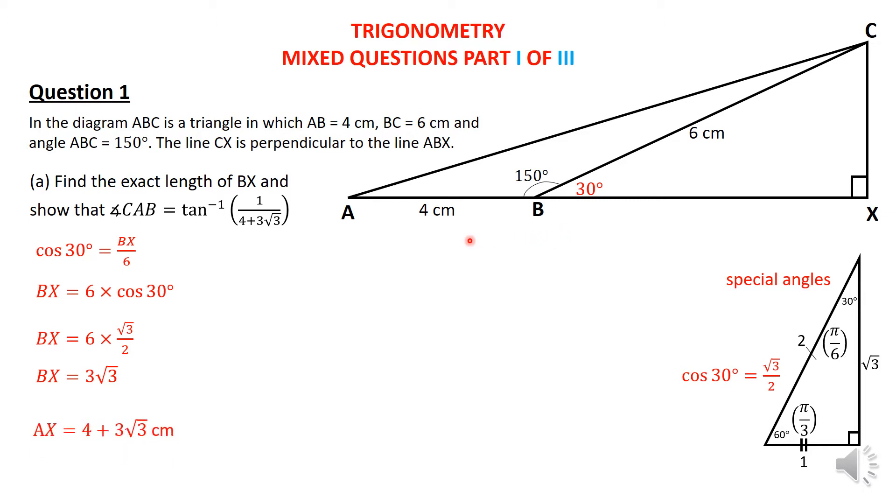Now, if you have to find the whole distance AX, you have to add that 4 there. But remember, we have done one particular distance, that is AX, but we need to still find CX. So to get CX, remember, we are looking the exact length of BX. We already proven it. That is fine. But now I'm going to go and show that angle CAB is equal to arctangent of 1 upon 4 plus 3 root 3. So for that, I need CX, and you will see exactly why.